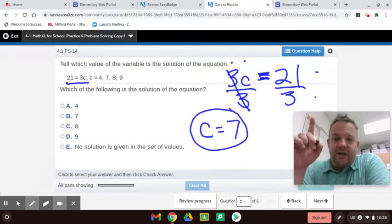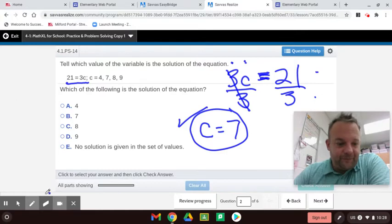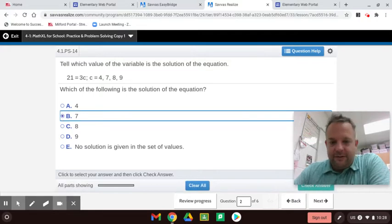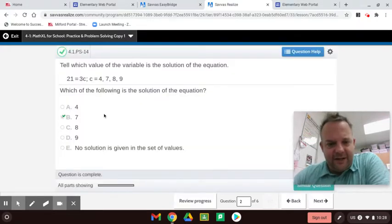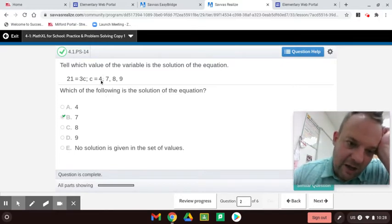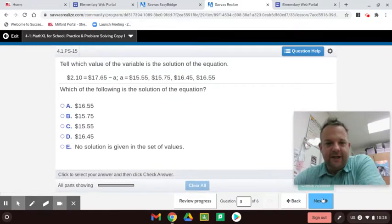Now, you always want to check it. So 3 times 7 is 21. So that checks. And here, they're just wanting you to test out each value. So let's see. 3 times 4? Nope, that's 12. 3 times 7? That's 21. So yeah, there it is. So they're giving you some choices to check it.